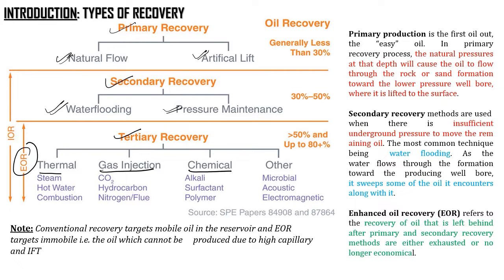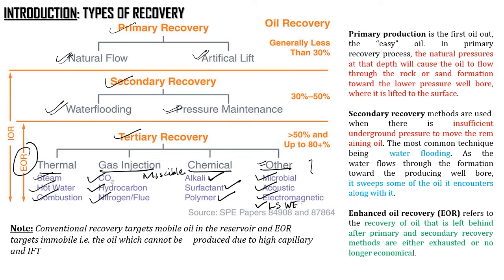Tertiary recovery generally constitutes EOR methods where I can have thermal EOR, gas injection EOR, chemical EOR, or other types. For thermal EOR I can have steam, hot water, or a combustion process. For gas injection I will generally have miscible gas injection using CO2, hydrocarbon, nitrogen, or flue gases. For chemical EOR I can have alkali, surfactant, polymer, or a combination of alkali-surfactant-polymer, also termed ASP flooding. Other EOR types include microbial, acoustic, electromagnetic, and nowadays low salinity water flooding.